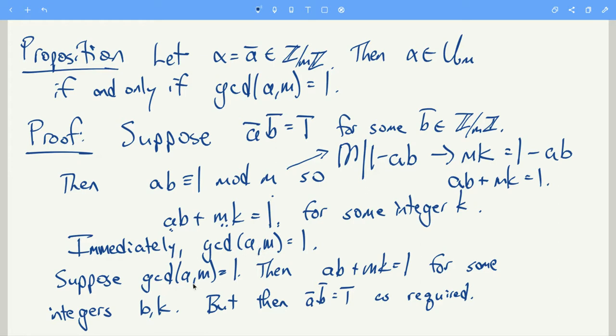Now suppose that the GCD of a and m is 1, then ab plus mk equals 1 for some integers b and k, then you can reduce modulo m, you get that a bar b bar equals 1 bar.